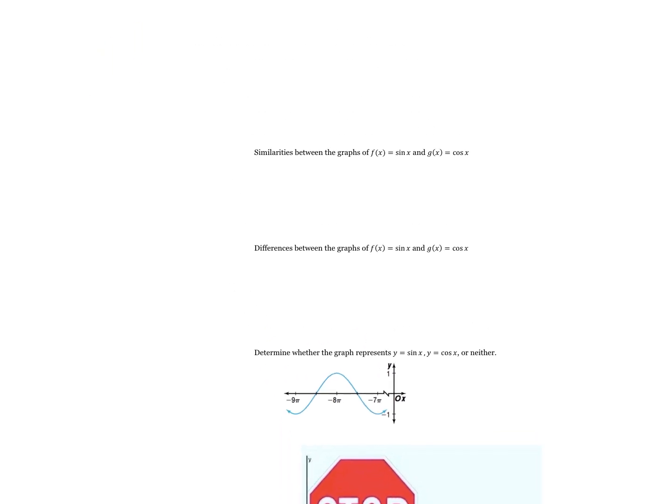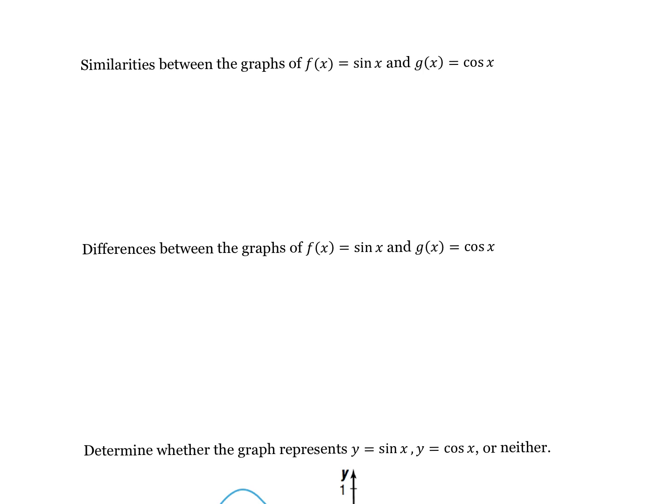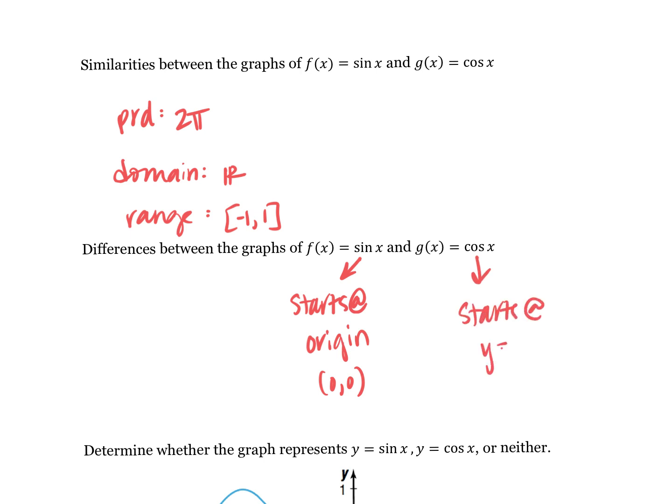Similarities between sine and cosine versus differences. What do we know about the period of both of them? How long for it to repeat itself? Two pi, a whole revolution around the unit circle. Both have a domain of all real numbers. And a range of negative one to one. What's the biggest difference that I want us to take away? Yes. Sine, we're going to say starts at zero, zero, or the origin. Very good. And cosine? Y is one. Well done.